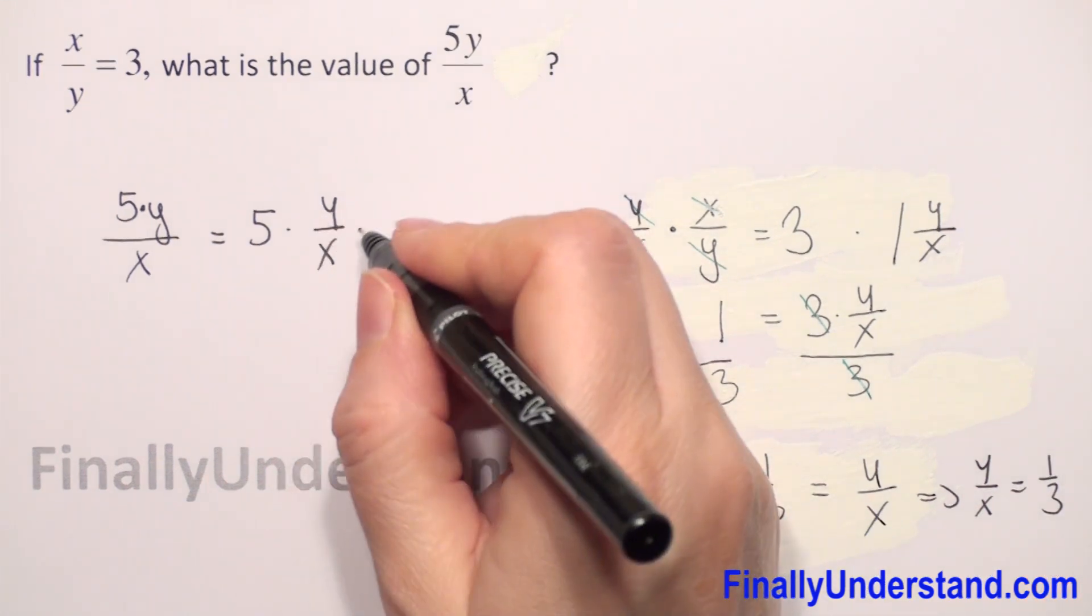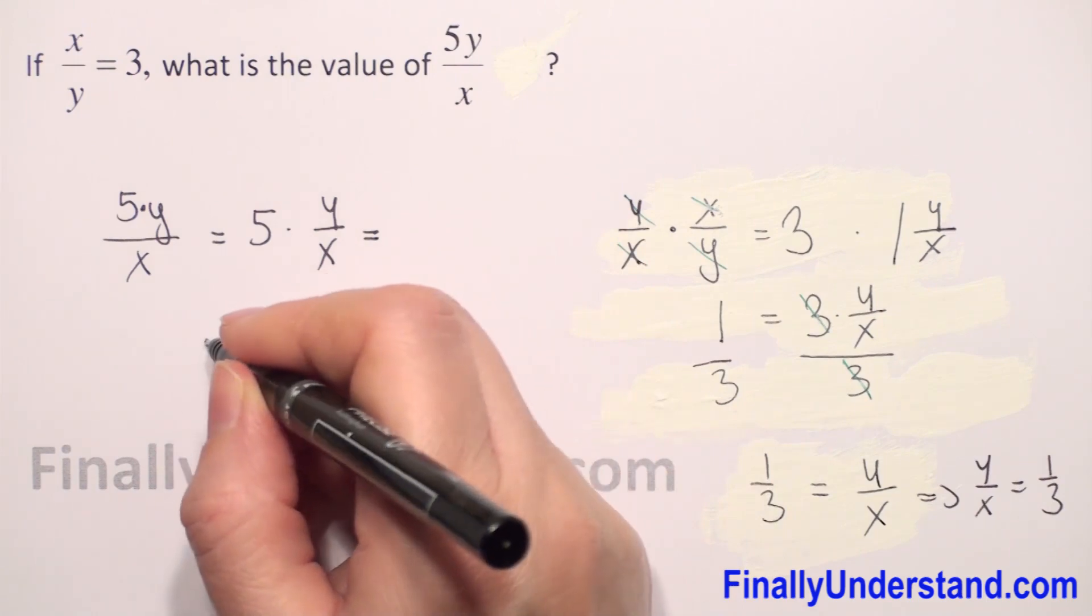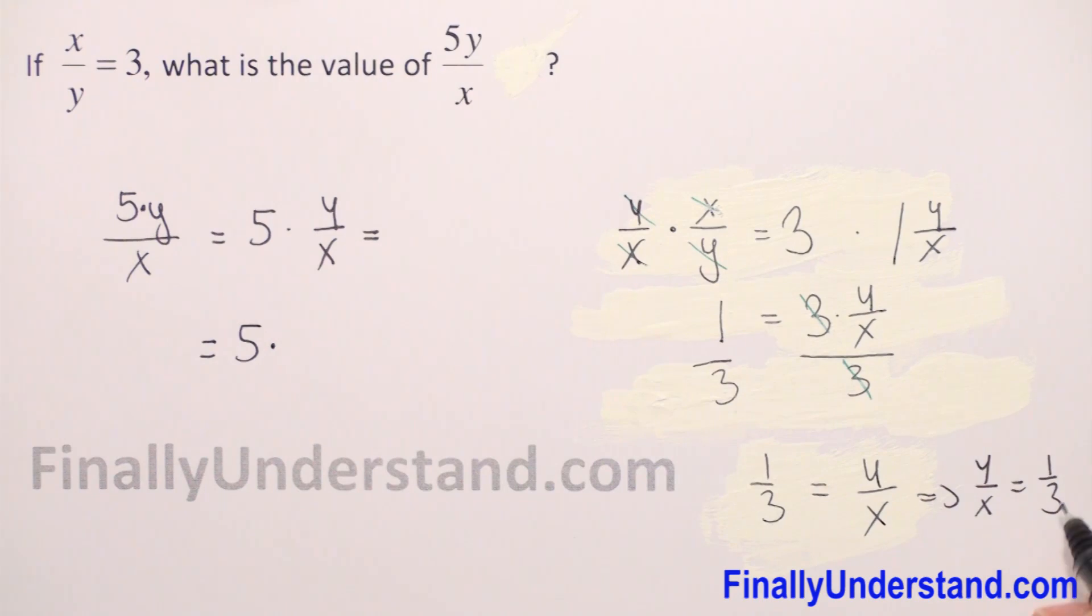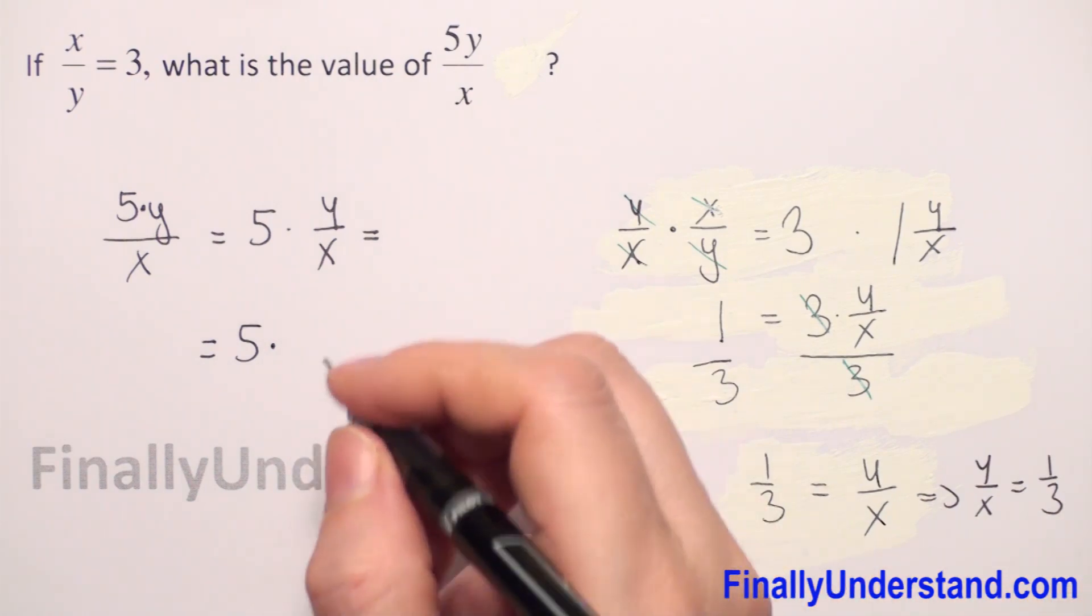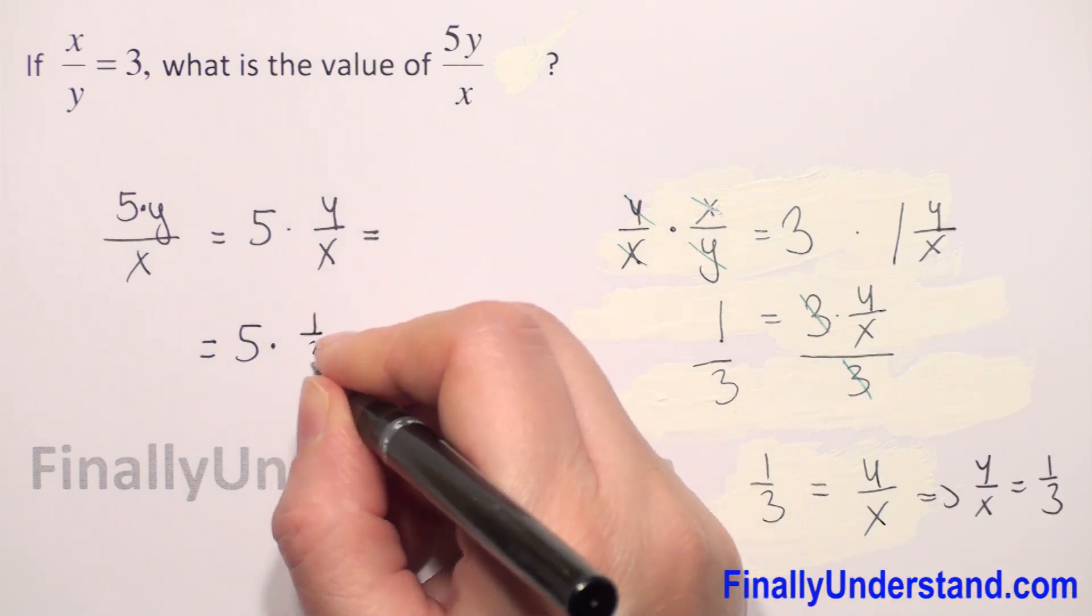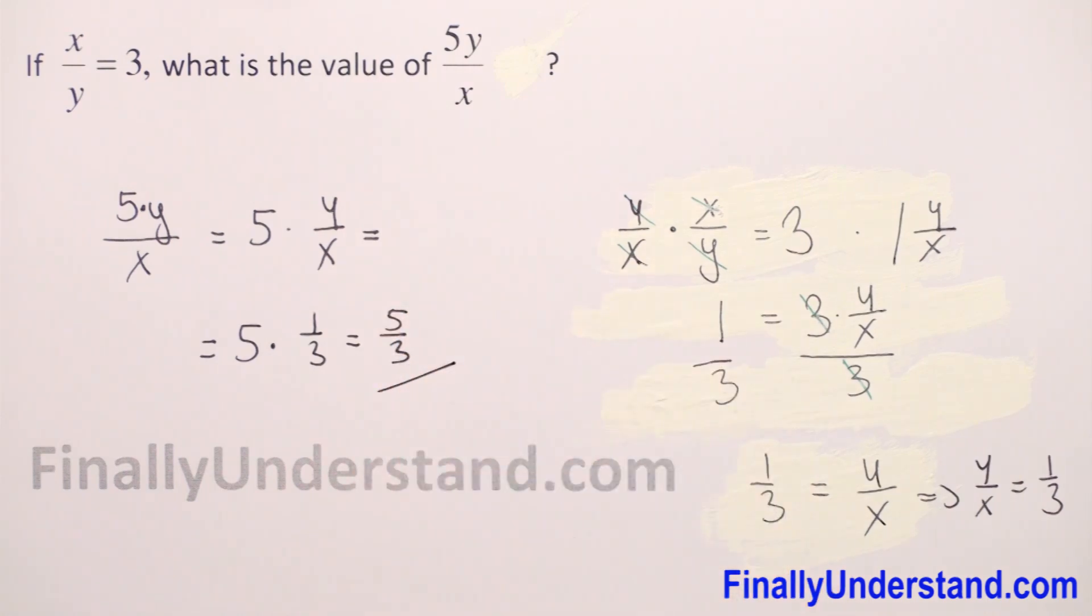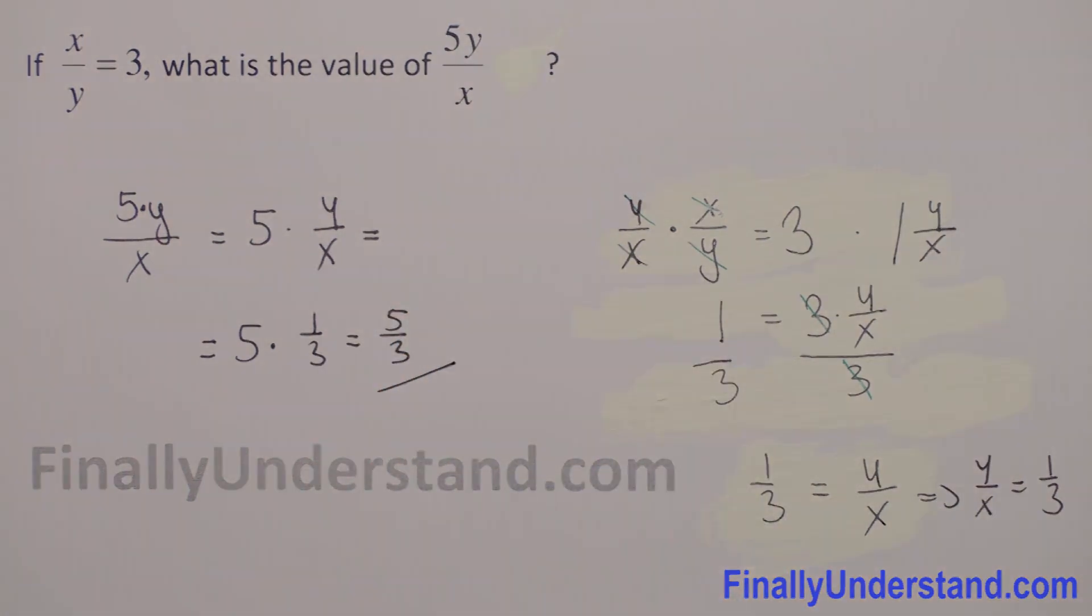So now we can come back to our expression. 5 we copy times, and y over x is 1 third. So we have times 1 third. So this is equal to 5 over 3. This is my solution.